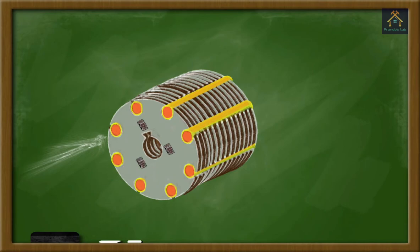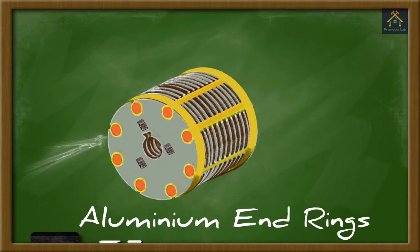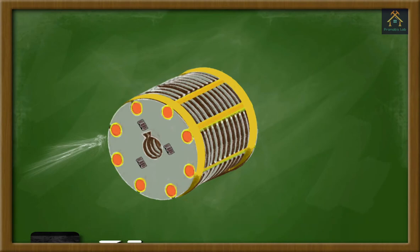For connecting the aluminum bars, two aluminum rings are fitted on each side of the cylinder. This is called the aluminum end rings. This creates a closed path and inside this the rotor EMF is formed and the rotor current can flow through the end rings and the bars.